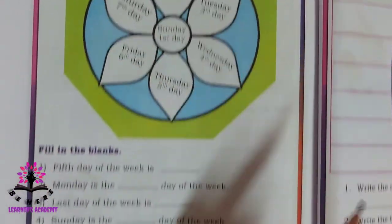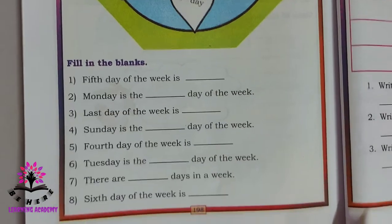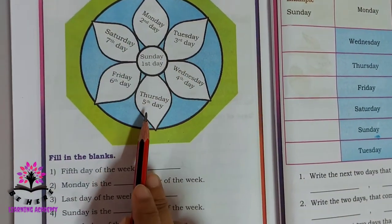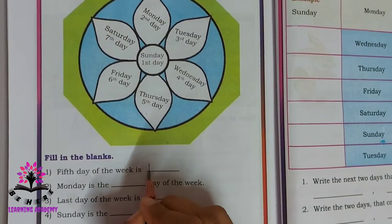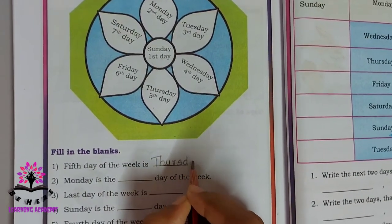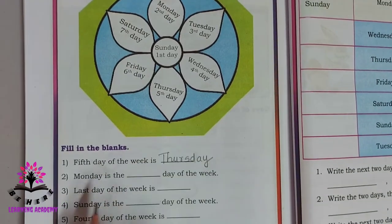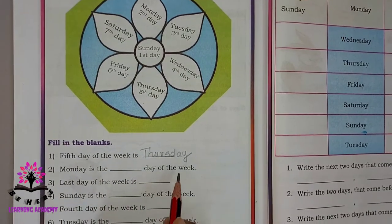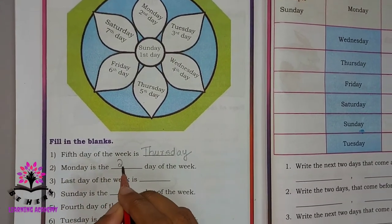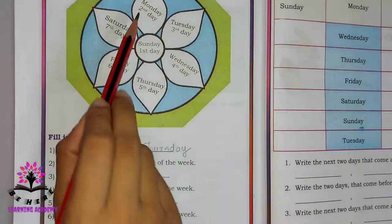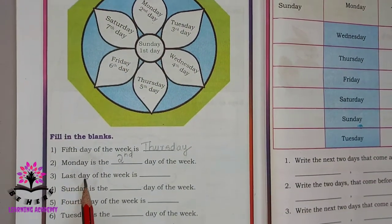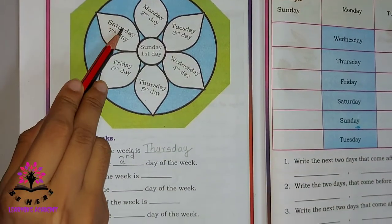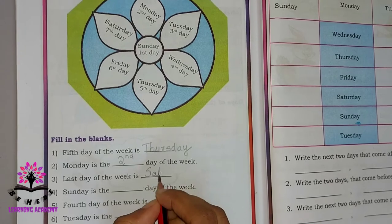See this picture and answer the questions below. Which is the fifth day of the week? Thursday — Thursday is the fifth day of the week. Monday is the second day of the week. The last day of the week is Saturday, so Saturday is the seventh and last day of the week.